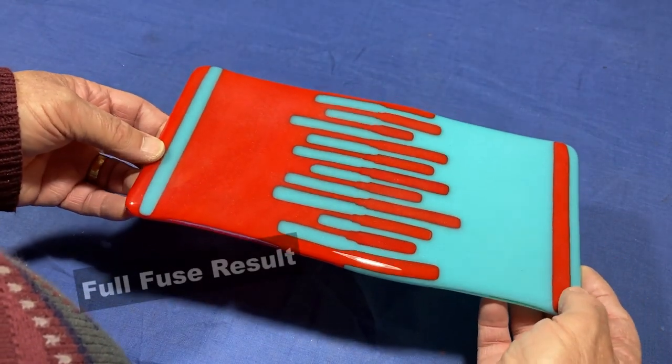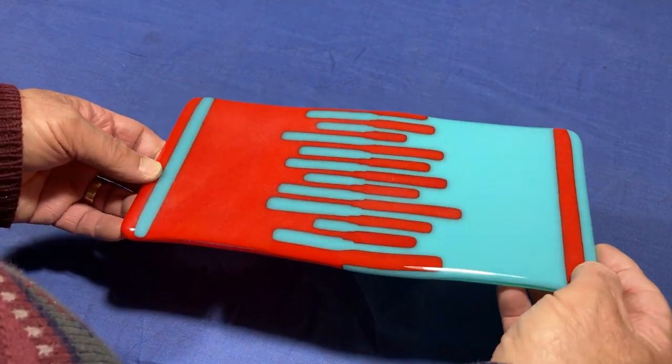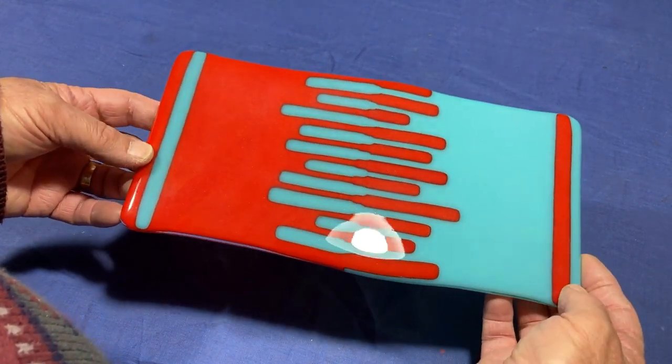The devit's gone and we've got a nice polish so now let's just get this in the kiln for the final slump.